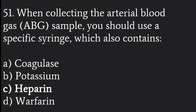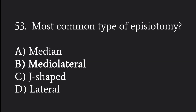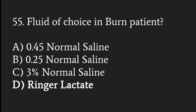When collecting an arterial blood gas sample, use a syringe that contains heparin so that the blood does not clot. The second stage of labor starts from the full dilatation of the cervix. The most common type of episiotomy is mediolateral. Sodium concentration in plasma is 130 milliequivalents per liter. The fluid of choice in burns patients is Ringer's lactate, used in Parkland's formula.